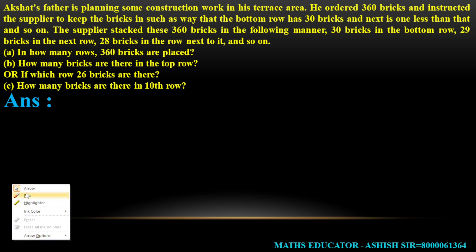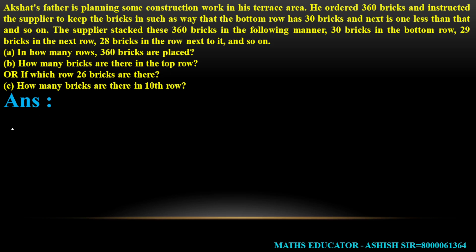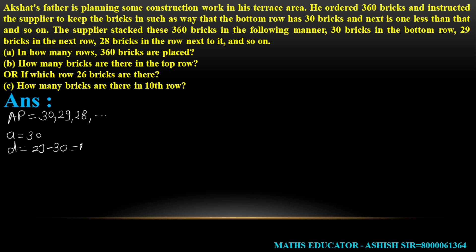Now, the sequence being formed: the bottom row has 30, then 29, then 28, and so on. So the first term 'a' is 30. The common difference 'd' is 29 minus 30, which equals minus 1.